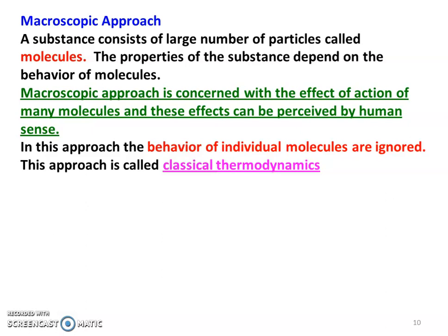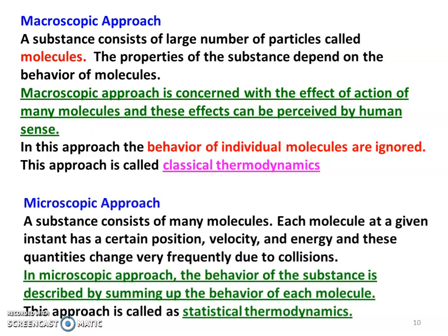Another approach is the microscopic approach. A substance consists of many molecules, and each molecule at a given instant has a certain position, velocity, and energy. These quantities change very frequently due to collisions. In the microscopic approach, we consider the behavior of individual molecules, and the properties are calculated by summing up the behavior of each molecule. This method is called statistical thermodynamics.